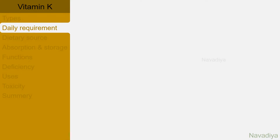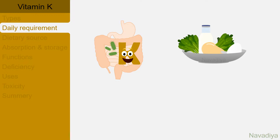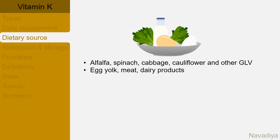Coming to its daily requirements. As our intestinal bacteria synthesize vitamin K, its requirement in diet is variable. It's estimated to be about 100 micrograms per day for an average adult. Dietary sources include alfalfa, spinach, cabbage, cauliflower, other green leafy vegetables, egg yolk, meat and dairy products.